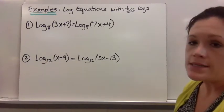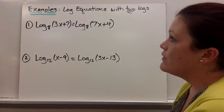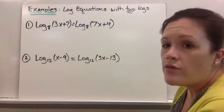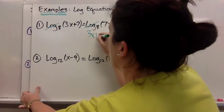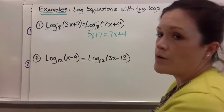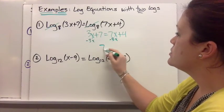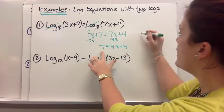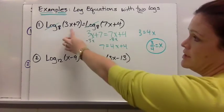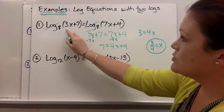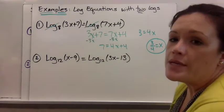On the next slide I have two basic examples where you have a log on both sides. So log base 8 of 3x plus 7 equals log base 8 of 7x plus 4. If you have log on both sides, you can just take them away and solve what's left, which is just a linear equation. So 3x plus 7 equals 7x plus 4. Subtracting 3x from both sides: 7 equals 4x plus 4. Subtracting 4: 3 equals 4x, and dividing by 4, x equals 3 fourths. Checking: 3 fourths is positive, so 3 times something positive plus 7 is not negative, and the other side is fine too.